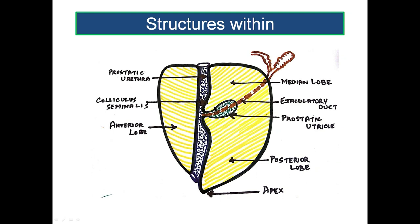Posteriorly you will find two structures behind the urethra: one is the prostatic utricle, and the other is a pair of ejaculatory ducts, one on either side of the prostatic utricle. The prostatic utricle is a 6-millimeter-length cul-de-sac with a mucosal lining and fibrous tissue covering it. It is supposed to represent the homologue of the uterus in the male, which is why it is called the prostatic utricle.